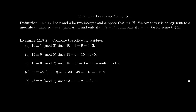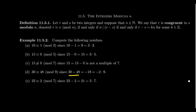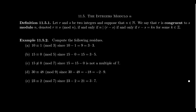A few more examples. 30 is congruent to 48 mod 9, because 30 minus 48 equals negative 18, which equals negative 2 times 9. It doesn't matter which order you subtract — if you compute 48 minus 30, you get positive 18, which equals 2 times 9. This shows the relation is symmetric. Also, 23 is congruent to 2 mod 7 because 23 minus 2 equals 21, which is divisible by 7.